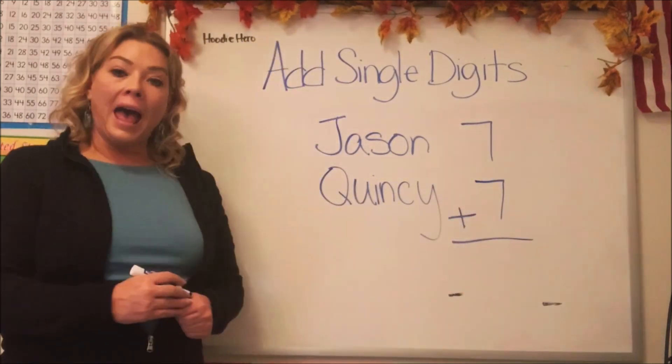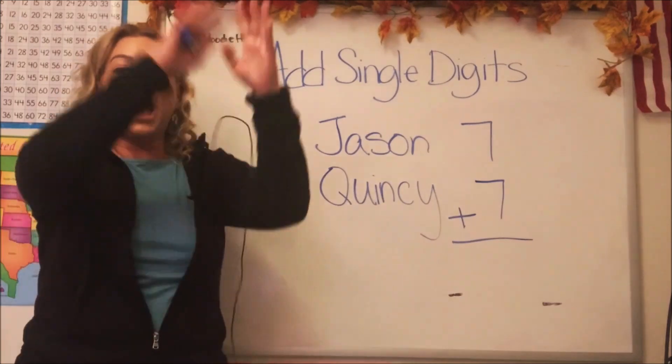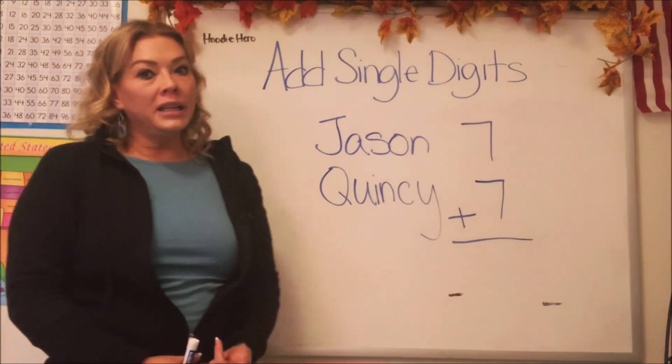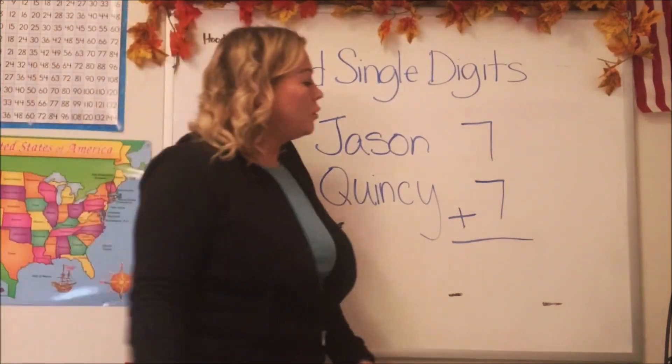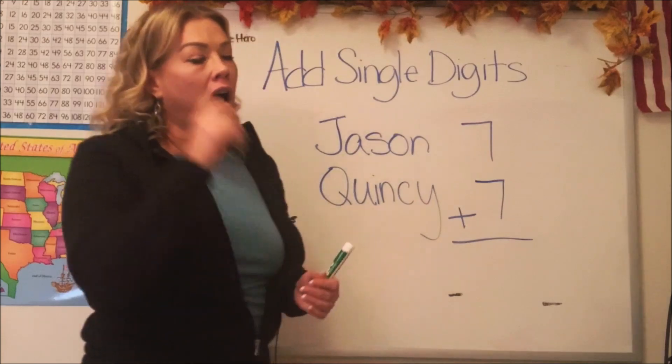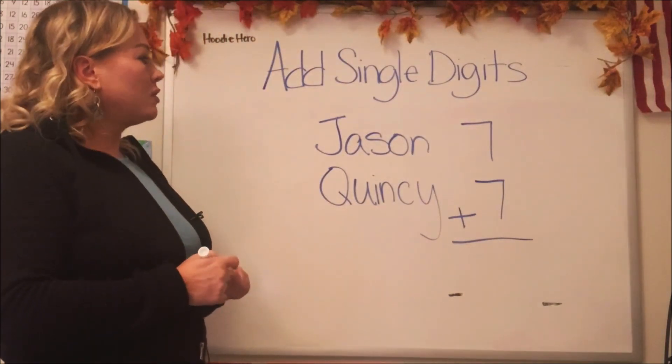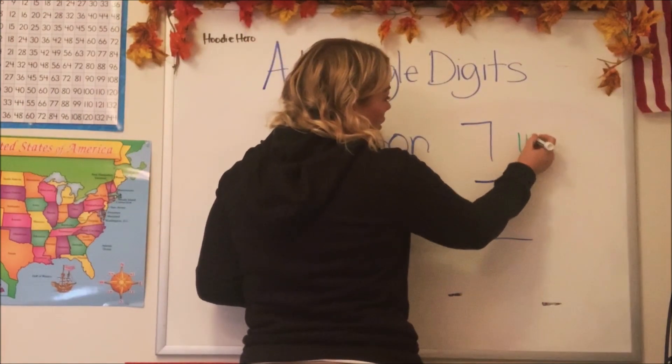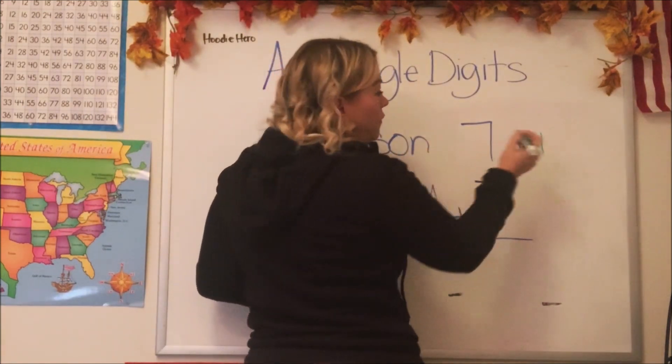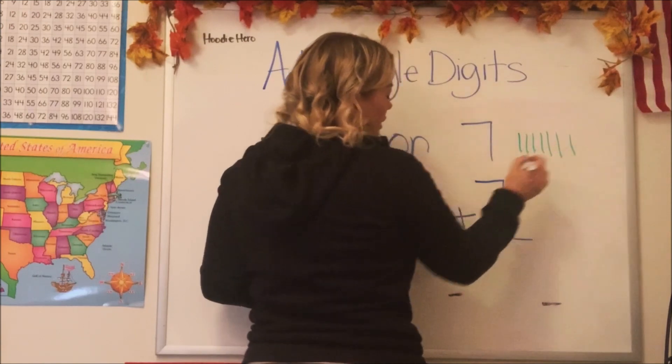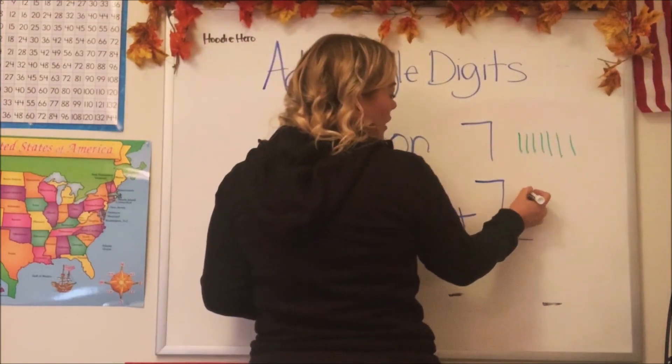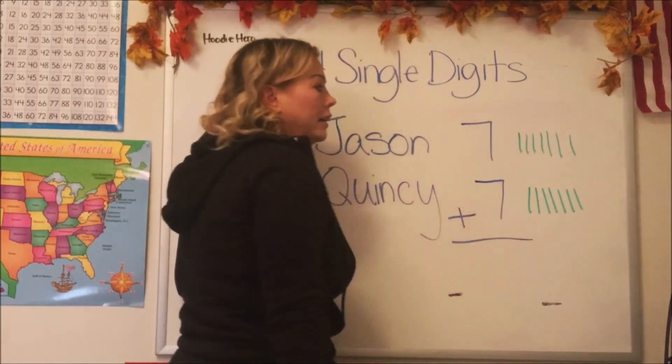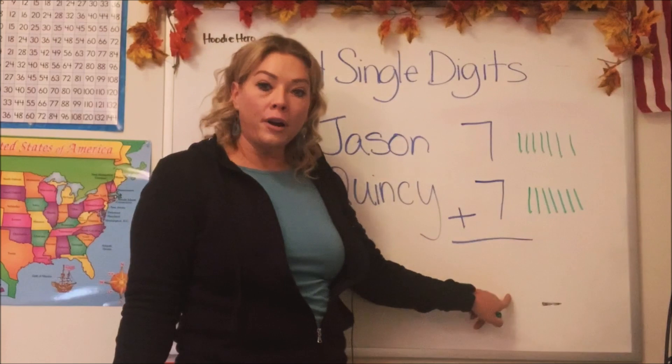Now it wants us to add seven and seven so we know how many puzzles we have total. Okay, so let's go ahead and do, how about we do some green lines, shall we, to help us figure this one out. Okay, so let's do seven lines for Jason. One, two, three, four, five, six, seven. And let's do seven lines for Quincy. One, two, three, four, five, six, seven.